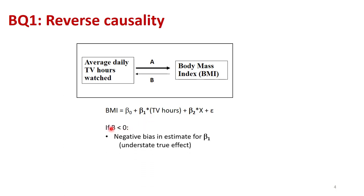Let's take the case that B is less than zero. That says as body mass index increases, then people watch less TV. This could be from parents saying, hey, it looks like you're gaining weight. I want you to watch less TV and go do some physical activity. If that's the case, if B is negative, that's contributing negatively to how TV hours and BMI move together. And so there's a negative bias on the estimate for beta one, you're going to understate the true effect.